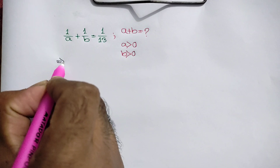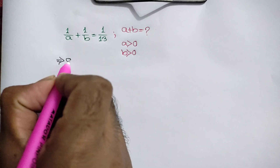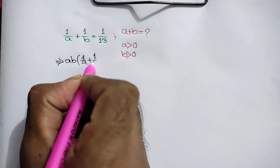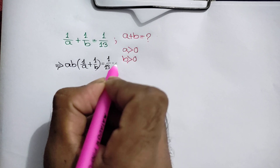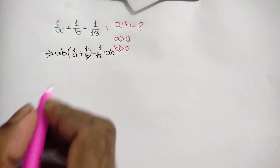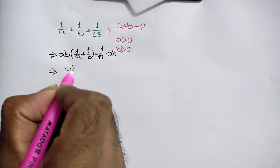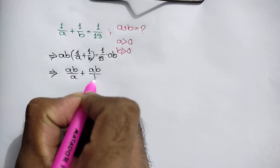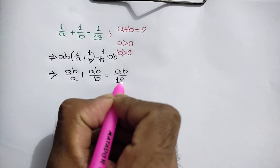Multiplying both sides by ab, we can write ab times 1 over a plus 1 over b is equal to 1 over 13 times ab. So ab over a plus ab over b is equal to ab over 13.